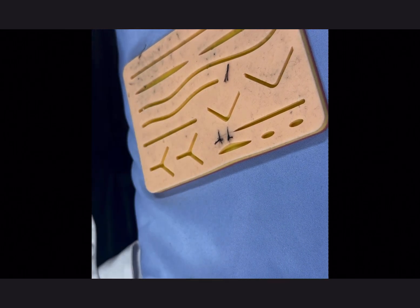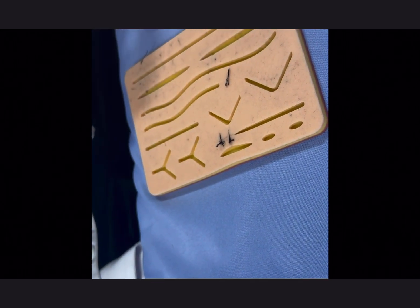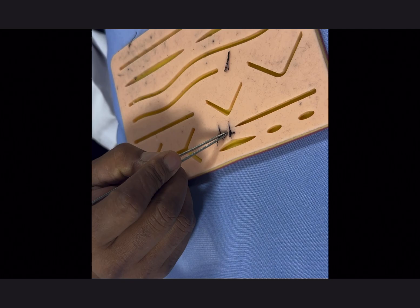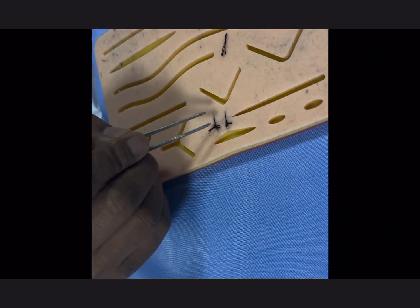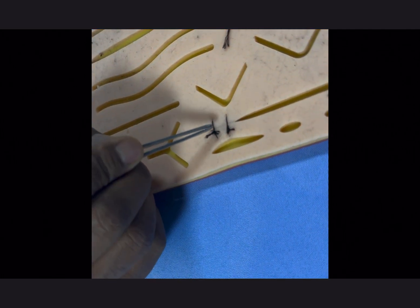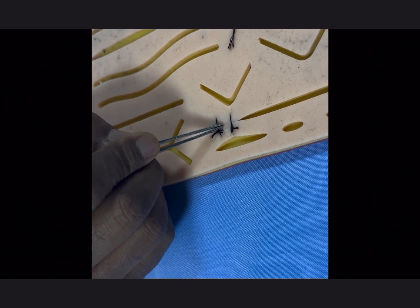This is the simple interrupted suture. You can see the margins are now opposed to each other. This is that way neat because this will ensure the healing of the wound by primary intention.